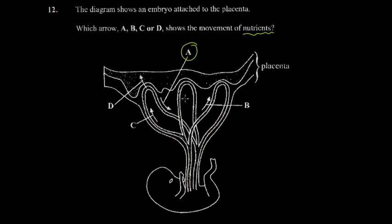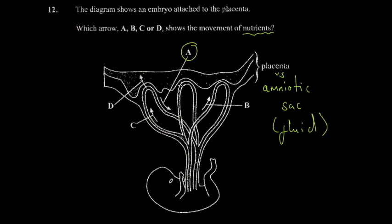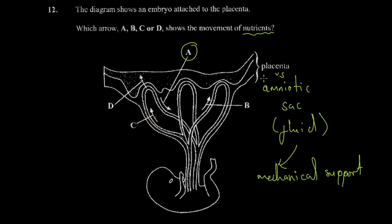The answer should be A — showing nutrients moving from the placenta toward the embryo. The placenta and the amniotic sac are different structures. The amniotic sac is a thin envelope containing fluid — in Shona it's called 'saga.' It serves a different function from the placenta: the placenta provides nourishment through its capillary network, while the amniotic sac provides mechanical protection and support, allowing the child to breathe and move around.